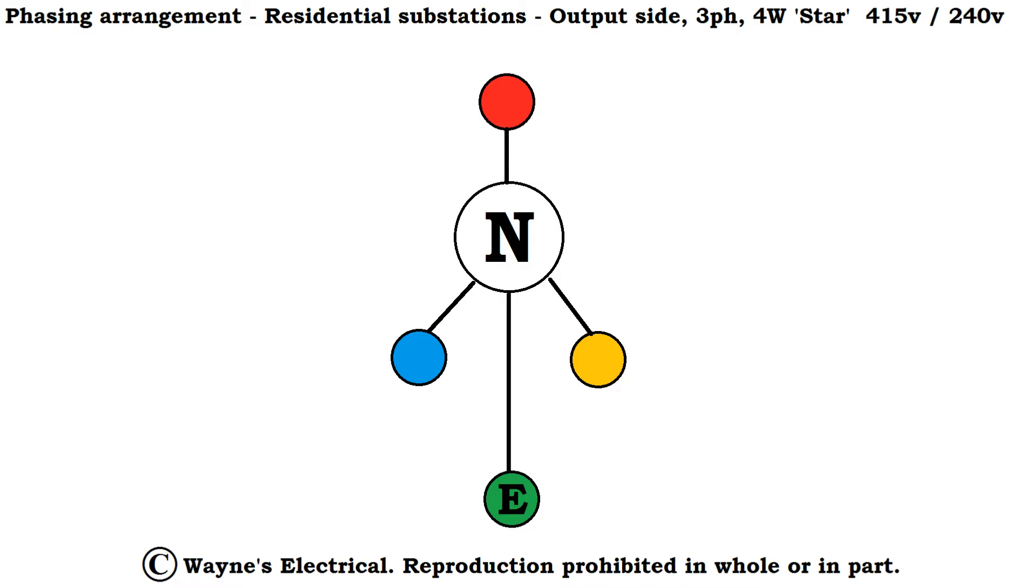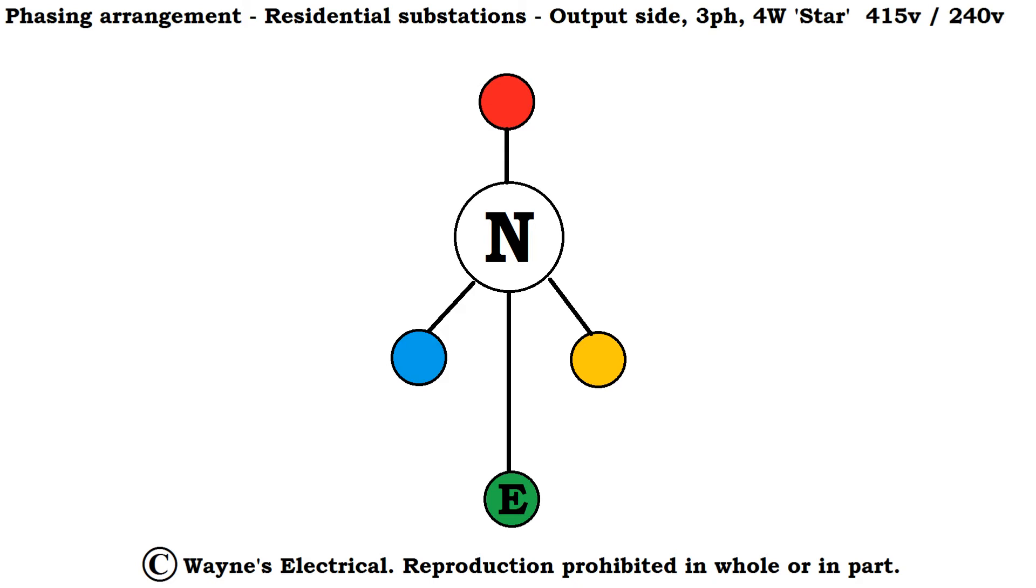Righty-o then, so we're into the screens. What we can see there on your screen then, full size, full HD size, it says phasing arrangement, residential substations, and we're looking at the output side of that, three phase four wire in star arrangements, which will give 415 slash 240 volts. Just to explain what's going on there, slap bang in the middle, we've got the big circle with the N in the middle of it, which symbolises neutral, normally referred to as the star points. The red, yellow and the blue, that's your three phases. And then that one right down the bottom there, which is green with the E in it, that's your earth connection, and that would normally be in the form of like a big earth electrode stuck in the ground, or it could be like a big copper mesh putting the ground underneath the substation.